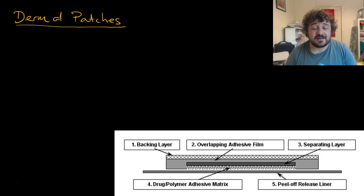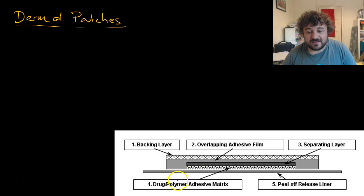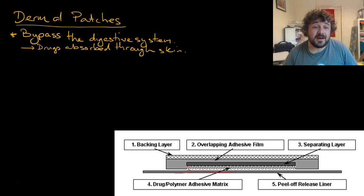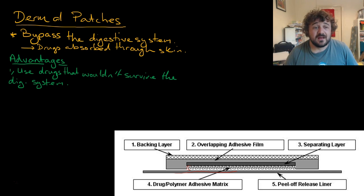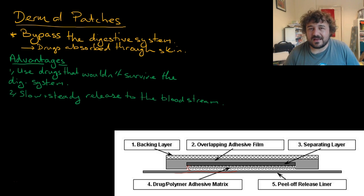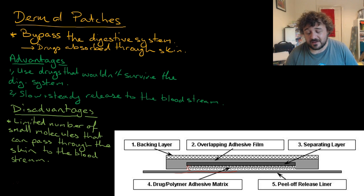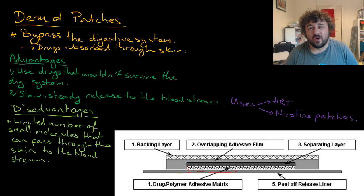Then we have the dermal patches. There's a sticky film that goes on, an inner release layer, and the skin goes on the bottom. There's a separating layer which basically contains the drug — the drug is contained in the drug polymer matrix. It gets put on your skin and will start to release slowly through there, bypassing the digestive system altogether. Advantages: you can use drugs that won't survive the digestive system, and it provides slow and steady release to the bloodstream. The main disadvantage is there are a limited number of small molecules that can pass through the skin into the blood. It's really useful for nicotine patches and hormone replacement therapy.